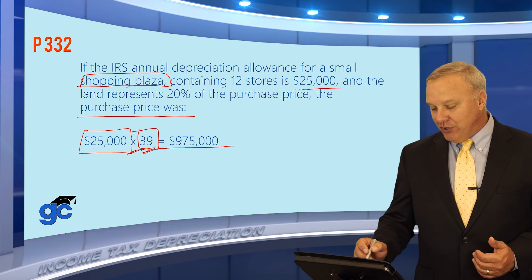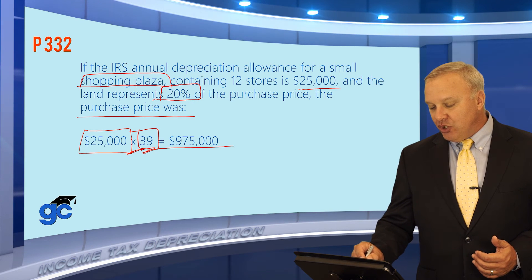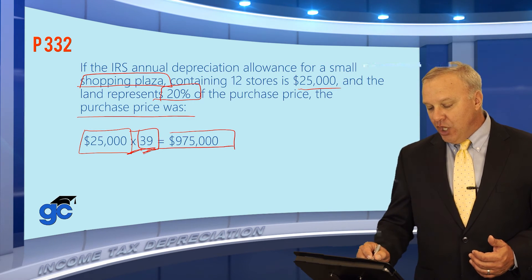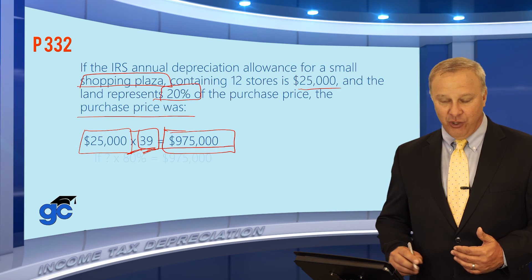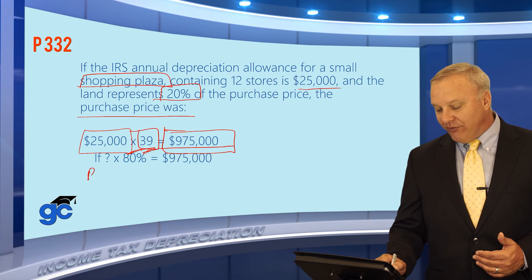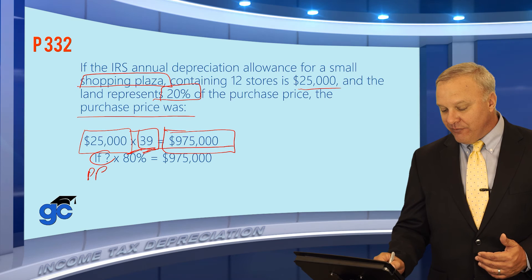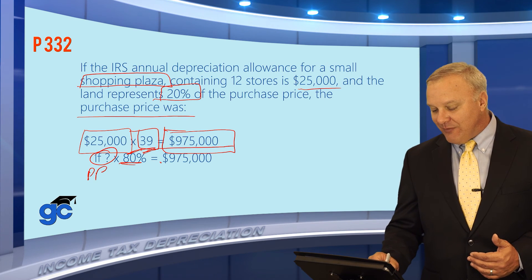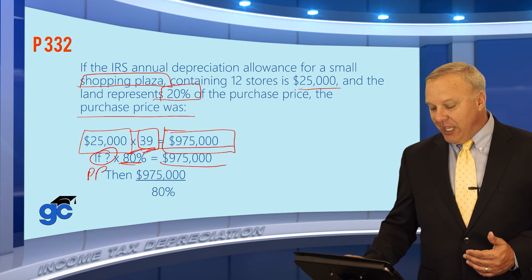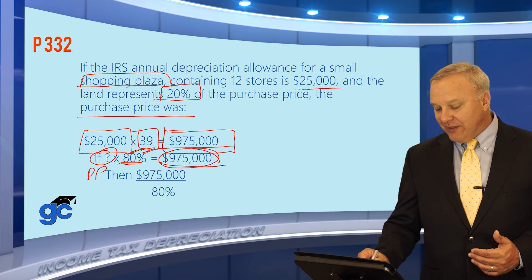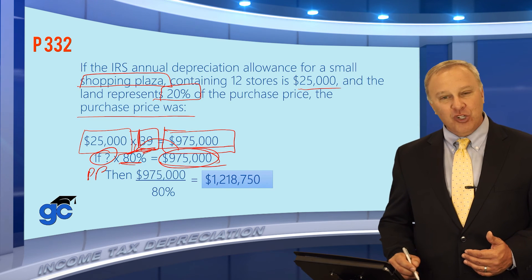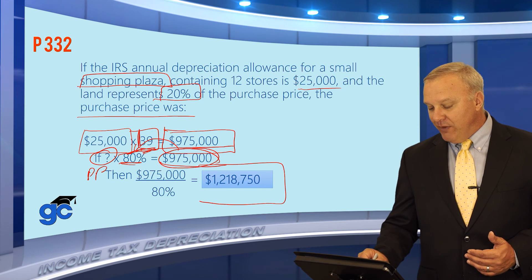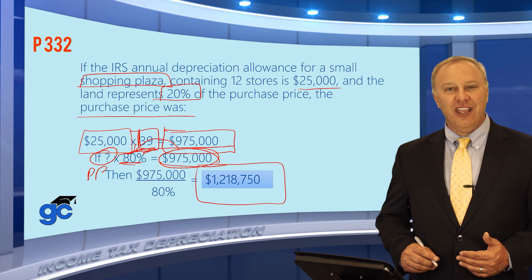That nine hundred seventy-five thousand was not the total purchase price because the land represented twenty percent of the purchase price. So nine hundred seventy-five thousand represents the building only, which is eighty percent of the purchase price. If total purchase price times eighty percent equals nine seventy-five, then we take nine seventy-five divided by 0.80, which tells us the purchase price of this property was one million two hundred eighteen thousand seven hundred and fifty dollars.